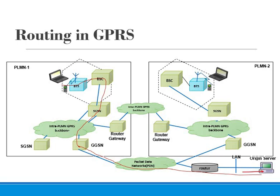Finally, it delivers the IP packet to the host. The home PLMN of the mobile station is PLMN 2, so an IP address has been assigned to the MS by the GGSN of PLMN 2. The mobile station's IP address has the same network prefix as the IP address of the GGSN in PLMN 2.